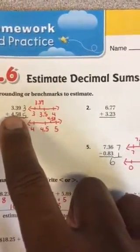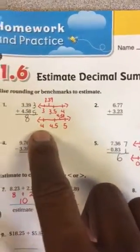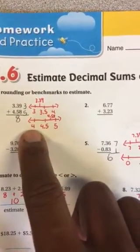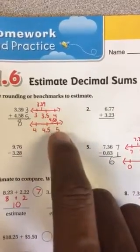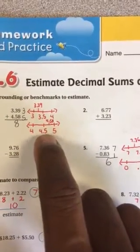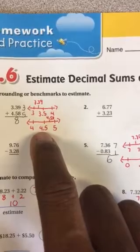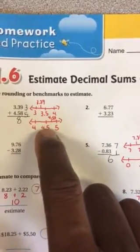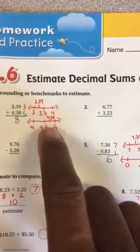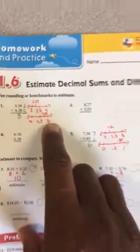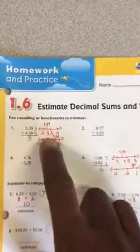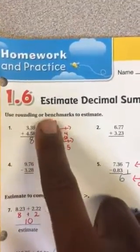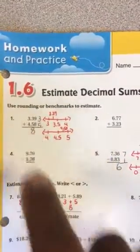Now let's look at 4 and 58 hundredths. The first number is 4. That means the next number is 5. The benchmark in the middle is 4 and a half. 4 and 58 hundredths is greater than 4 and a half. So that means it's closer to the 5. So that rounds off to 5. So 3 plus 5, the estimate is 8.